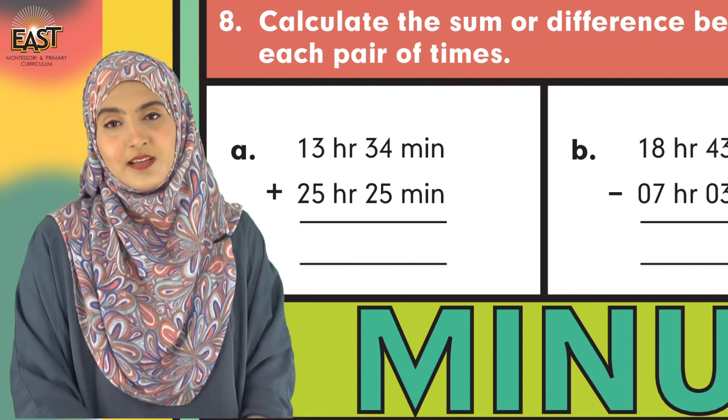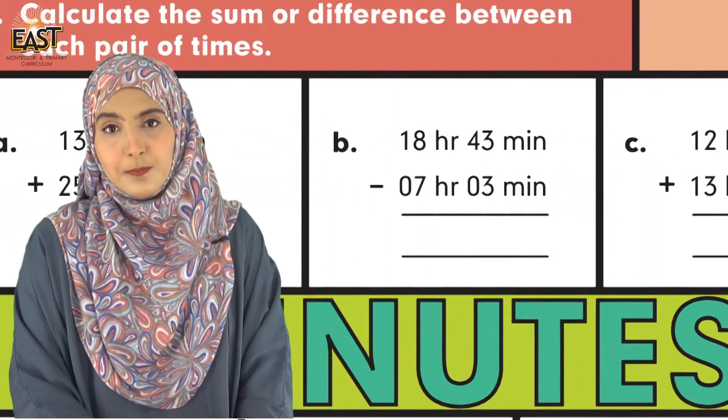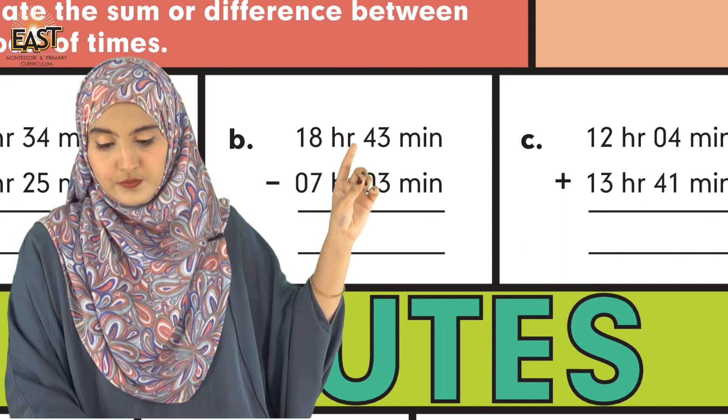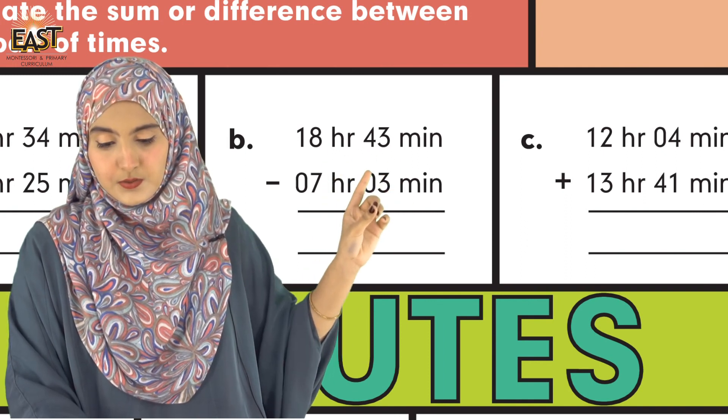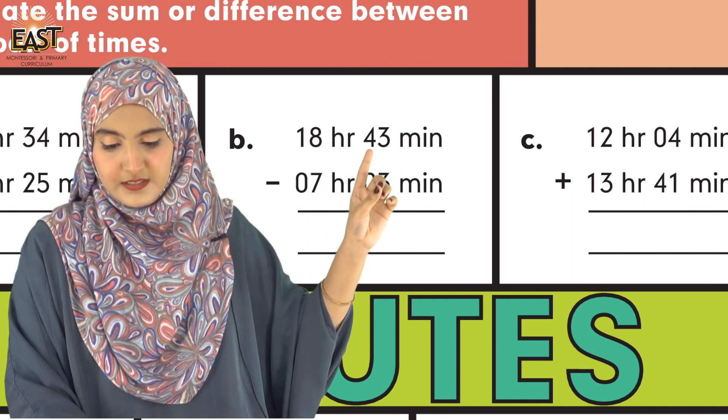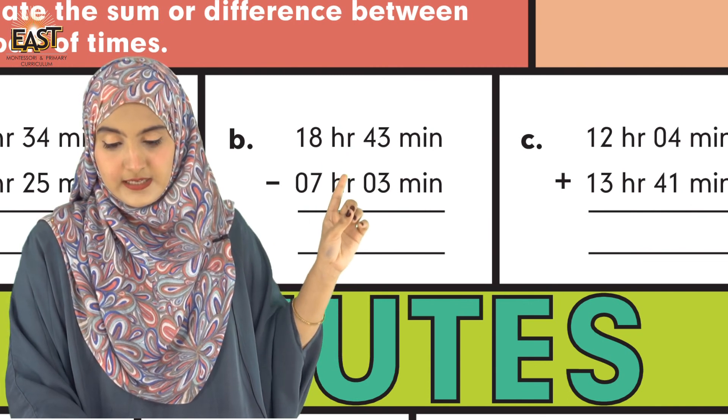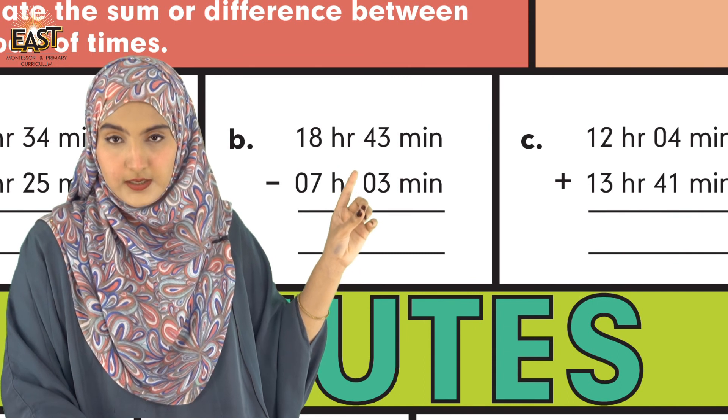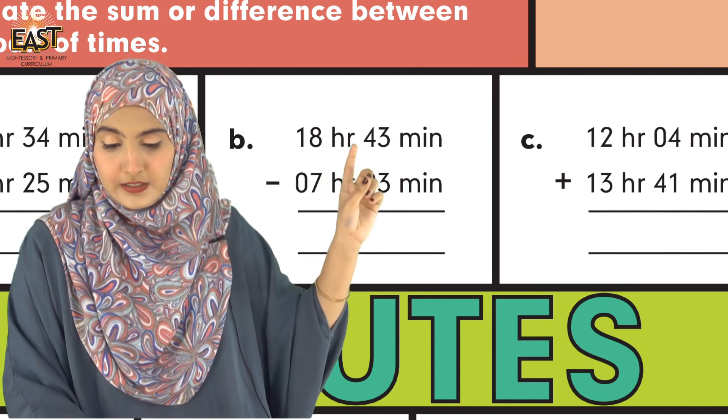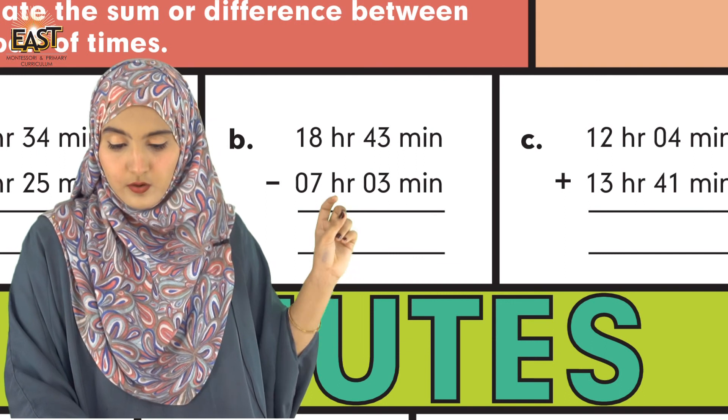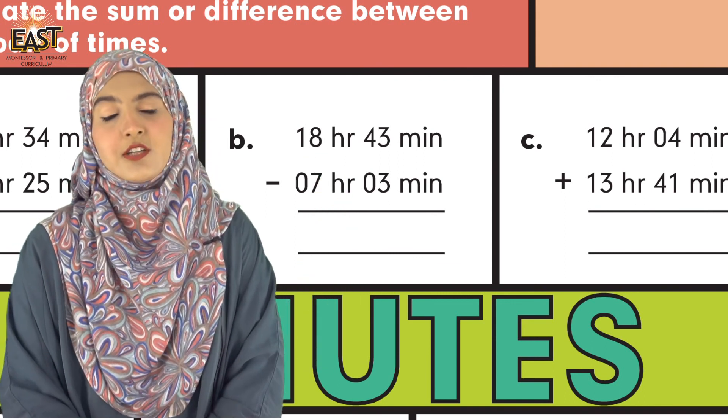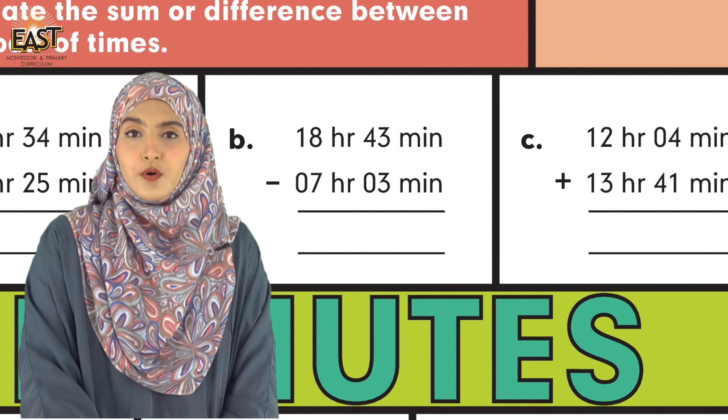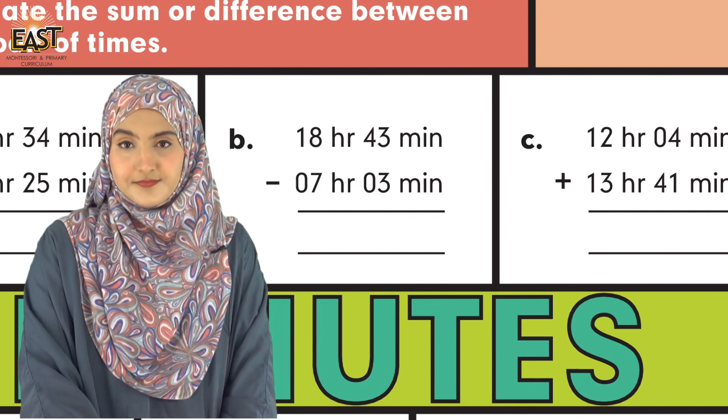Now moving to part (b): 18 hr 43 min minus 07 hr 03 min. 43 minus 3: 3 from 3 gives us 0. Because we are subtracting here, 3 minus 3 is 0. When we subtract 4 from 0, the answer is 4. So we have 40 minutes. You need to mention the unit.